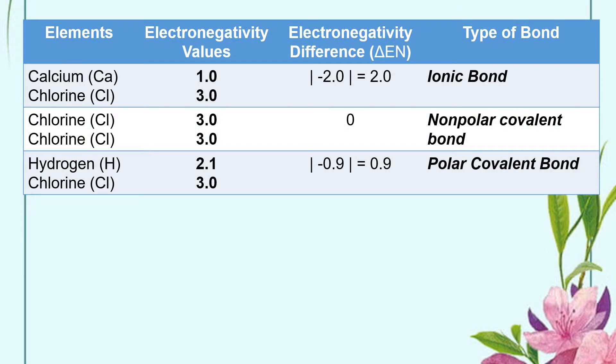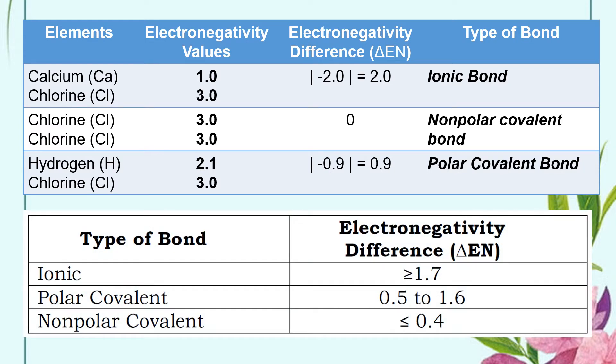The first step is to get the electronegativity values of the given atoms. You may find these electronegativity values in your periodic table of elements. Then after getting the electronegativity values of these atoms, get the difference. For example, in calcium and chlorine, 1.0 and 3.0 electronegativity values respectively. Then we can get their difference: 1.0 minus 3.0 is negative 2.0. Get the absolute value of negative 2.0. That will yield 2.0 electronegativity difference.